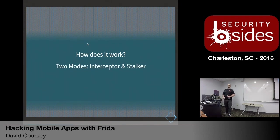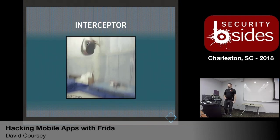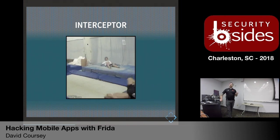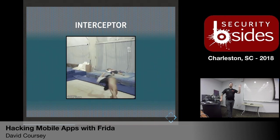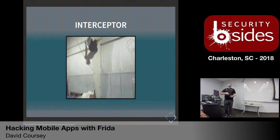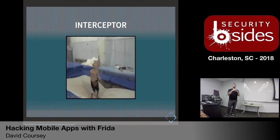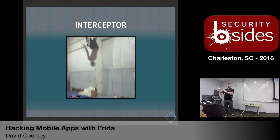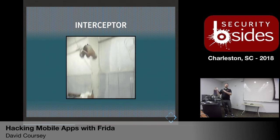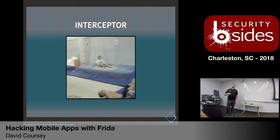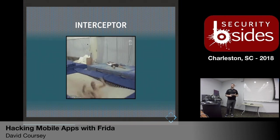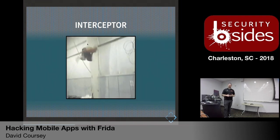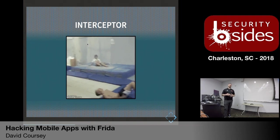Frida has two primary modes of operation. First is Interceptor, which actually takes the live assembly code running in memory and puts in a trampoline — it injects new assembly into memory to tell the program execution to go to a different path, to a new code location in memory that we can control, monitor, and do whatever we want with. This is very noisy. When you have things like jailbreak detection or game anti-cheat detection, Interceptor is easier to detect.